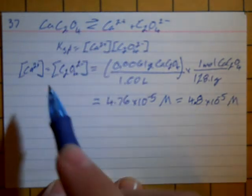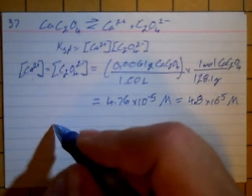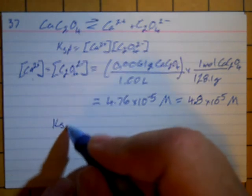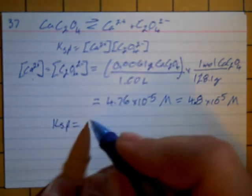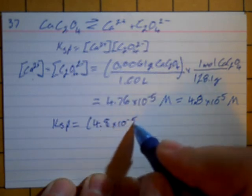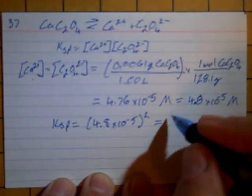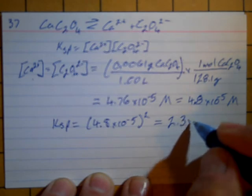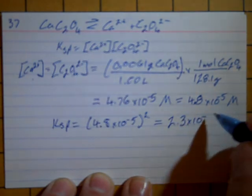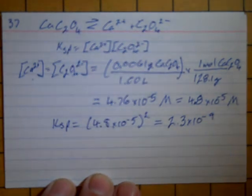Now we had already said these two concentrations are the same. So both of them are equal to this. So Ksp is going to equal 4.8 times 10 to the minus 5 squared. And that equals 2.3 times 10 to the minus 9. And for Ksp there are no units.